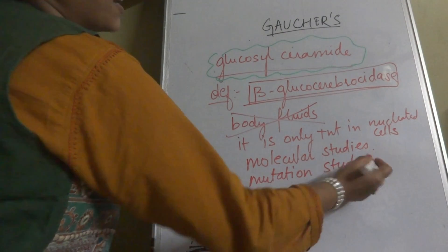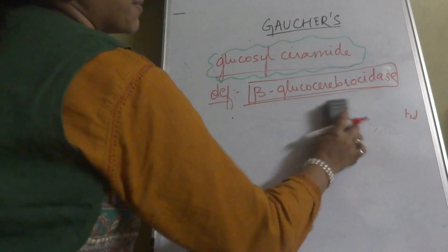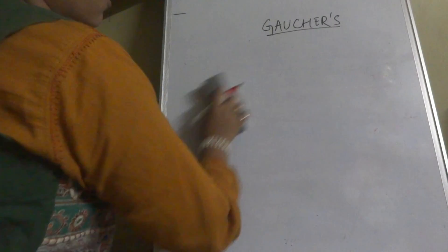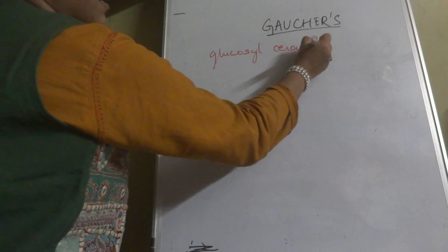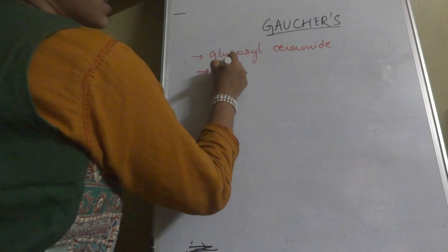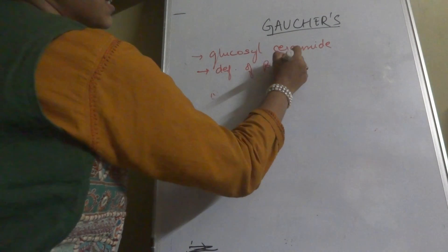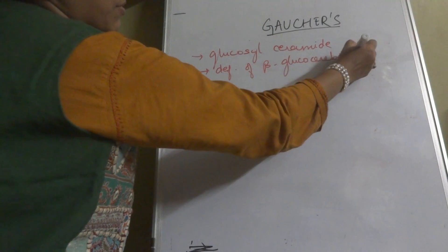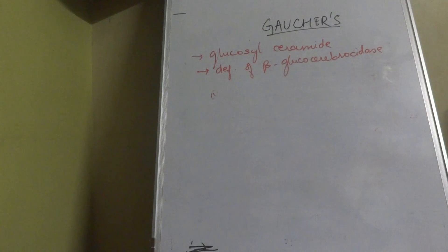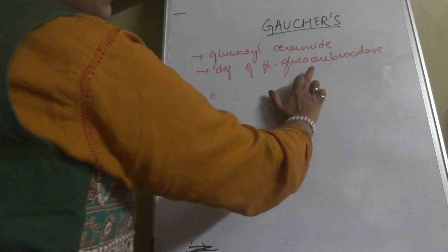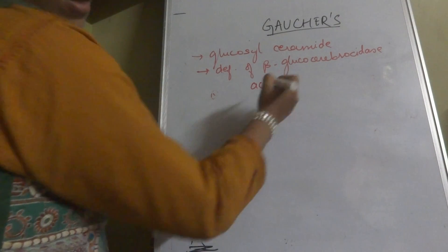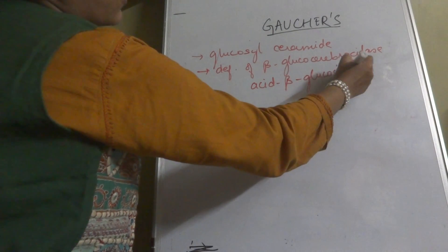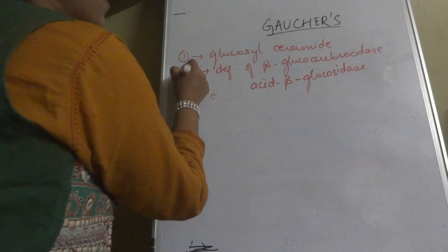To summarize the two key points in Gaucher's disease: first, it is a lipidosis with accumulation of glucosylceramide; second, it involves deficiency of beta-glucocerebrosidase, which in other books is also referred to as acid beta-glucosidase. These are the key MCQ points.